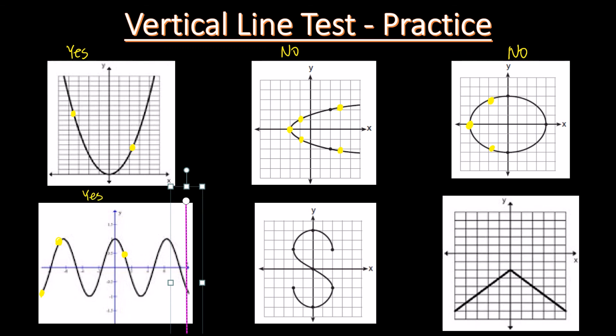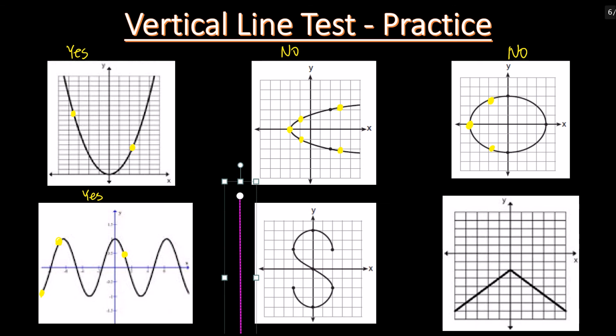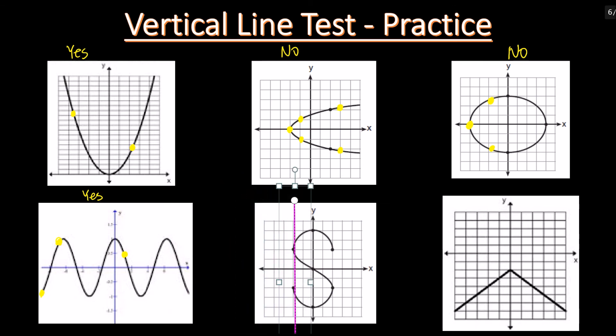Next question. Follow the same procedure: place the vertical line at the very left side of the graph. The vertical line intersects the graph twice, so it's not a function.